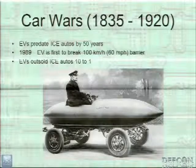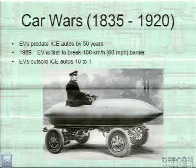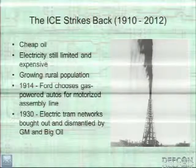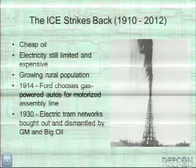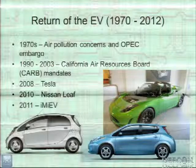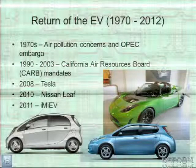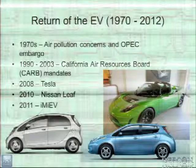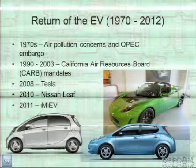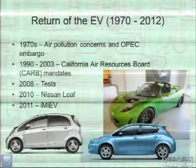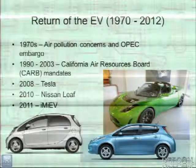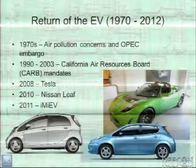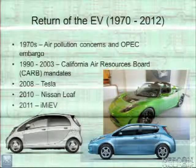EVs have been around for a long time — about 150 years. They're just now starting to make a comeback. Originally, electricity was expensive and people didn't have it in their homes, so once oil was struck it was cheaper to drive gas cars. There have been surges due to the OPEC oil embargo and California's CARB mandates. Recently, the Tesla, Nissan Leaf, and others are hitting the market, primarily because advances in smartphone batteries have driven battery technology to make electric cars feasible.